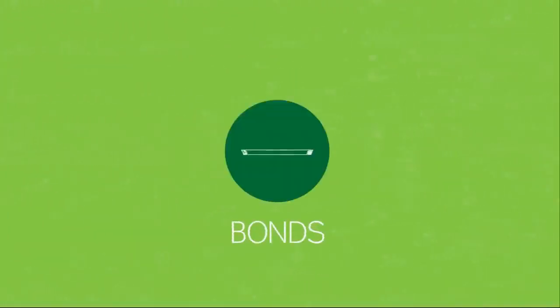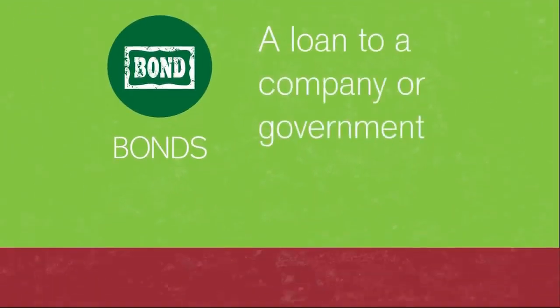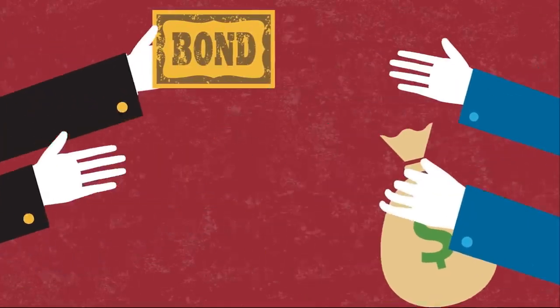Next up, bonds. Bonds are just a loan to a company or government. They borrow by selling a bond, which is simply a promise to repay the buyer in a fixed number of years at a fixed interest rate.